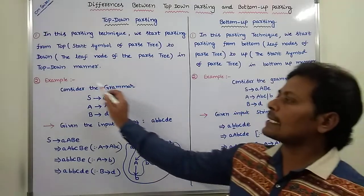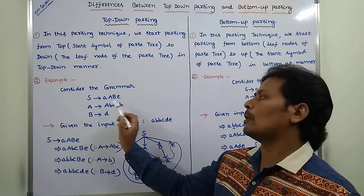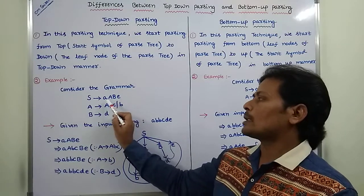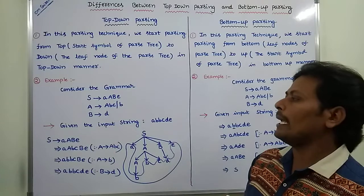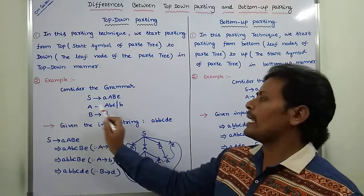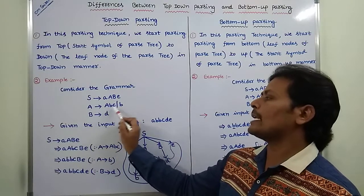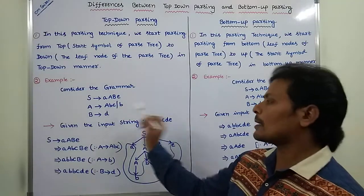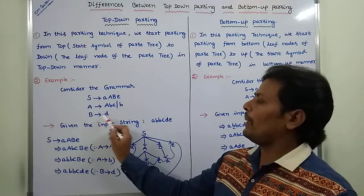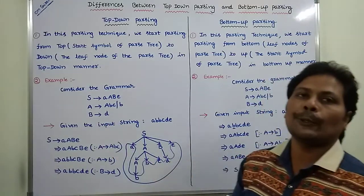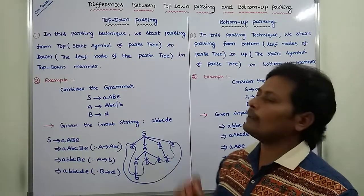Now consider this grammar. S is equal to small a, capital A, capital B, small e. A equals capital A, small b, small c, or small b. Capital B is equal to d. This is the given grammar.